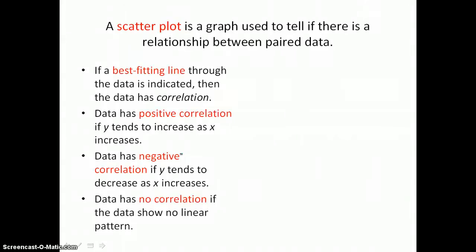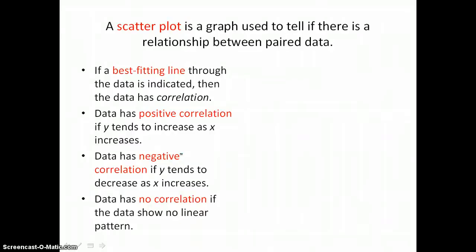A scatterplot is a graph used to tell if there is a relationship between paired data. If a best-fitting line through the data is indicated, then the data has correlation.